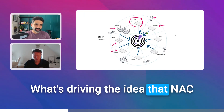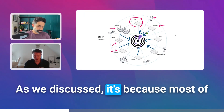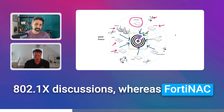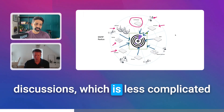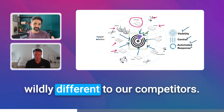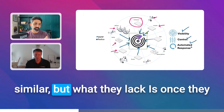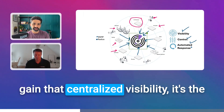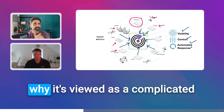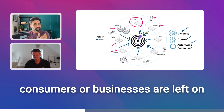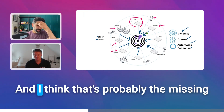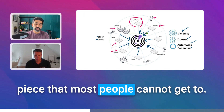What's driving the idea that NAC is too complex to implement? Most vendors start the NAC conversation with 802.1X, whereas Fortinet prefers to start with SNMP, which is less complicated. But beyond that, I think the missing piece is that once you gain centralized visibility, it's the integration story — the control part and the automated response — that most consumers are left on their own to figure out: now I've got this visibility, what do I do with it?